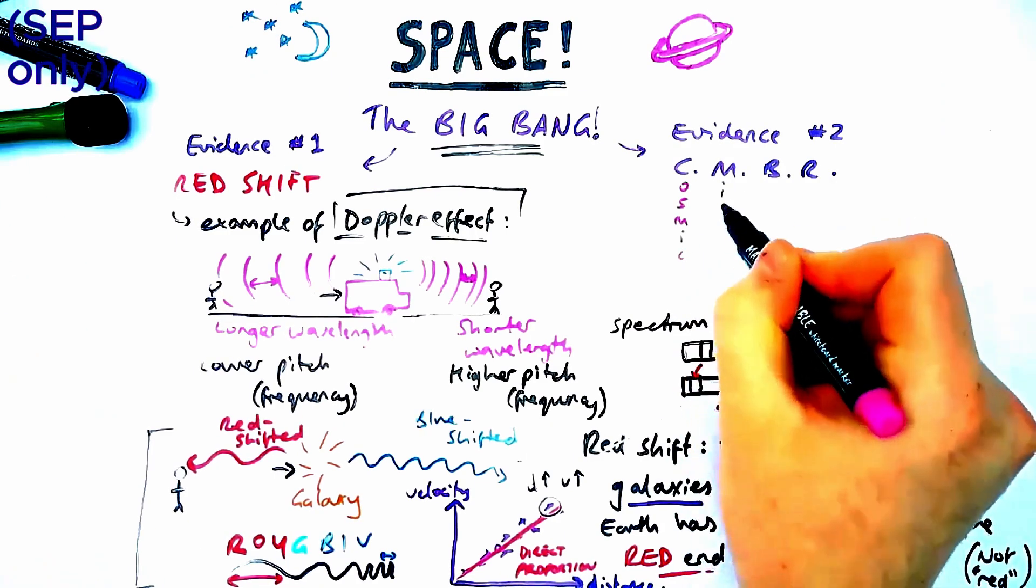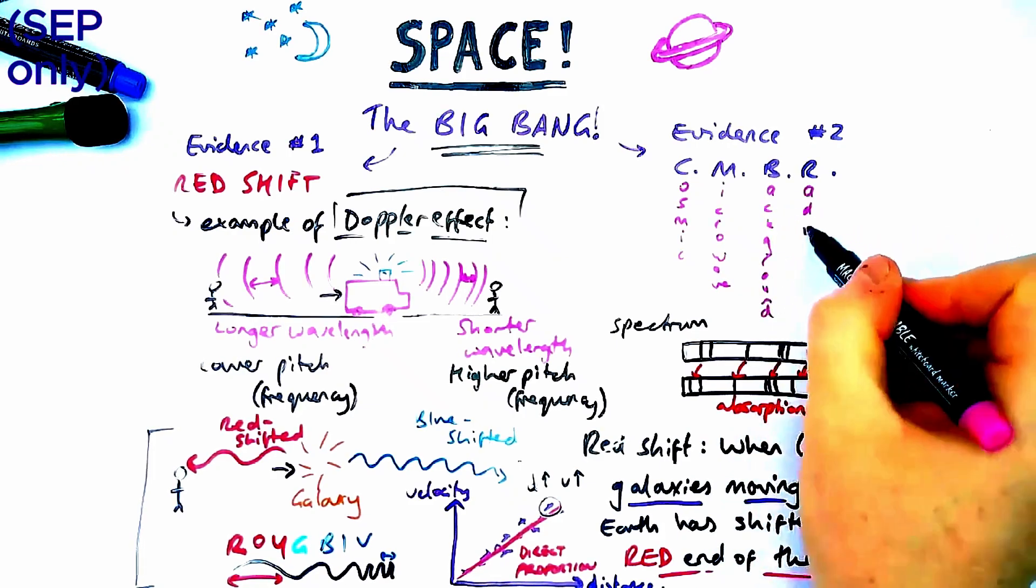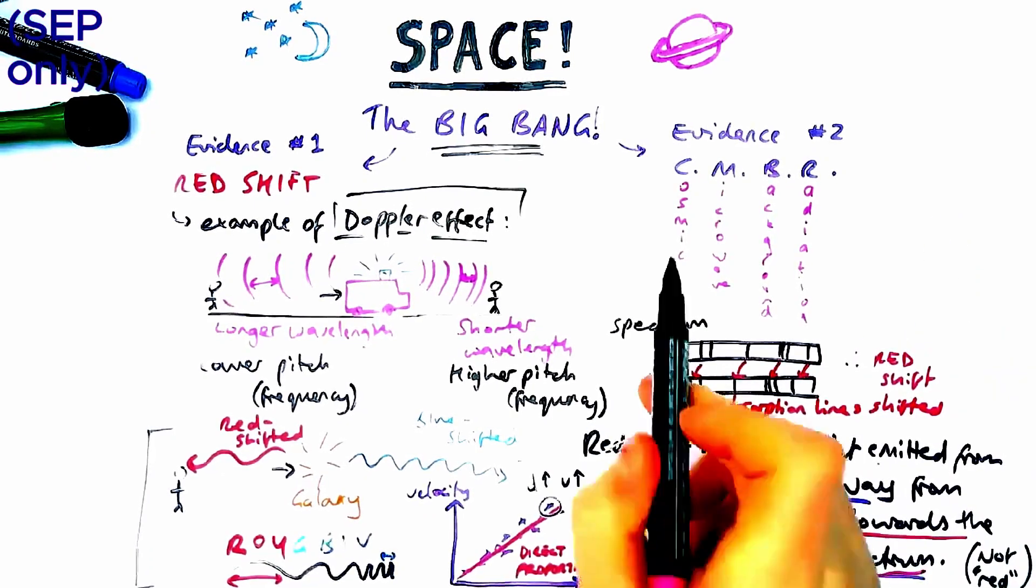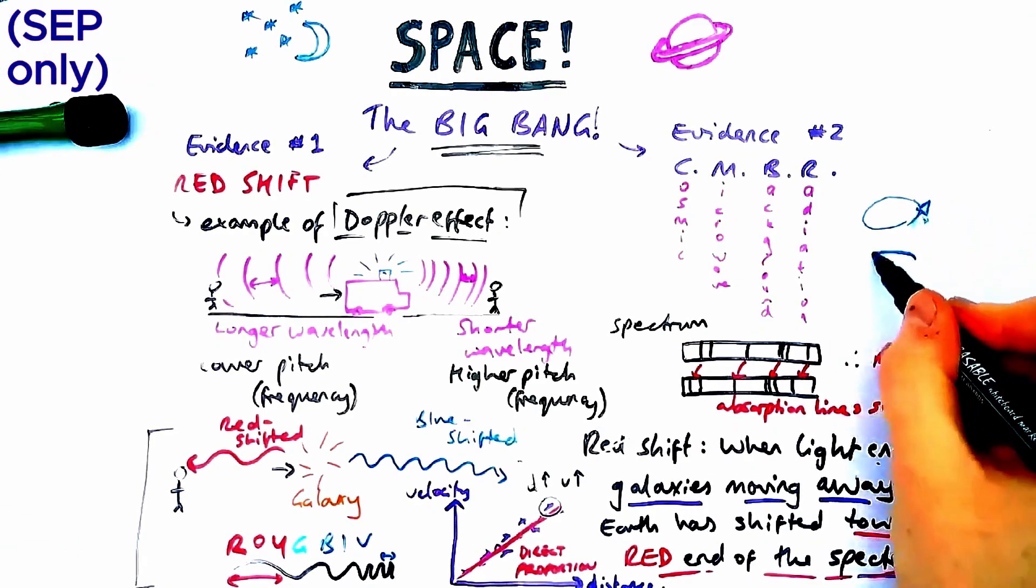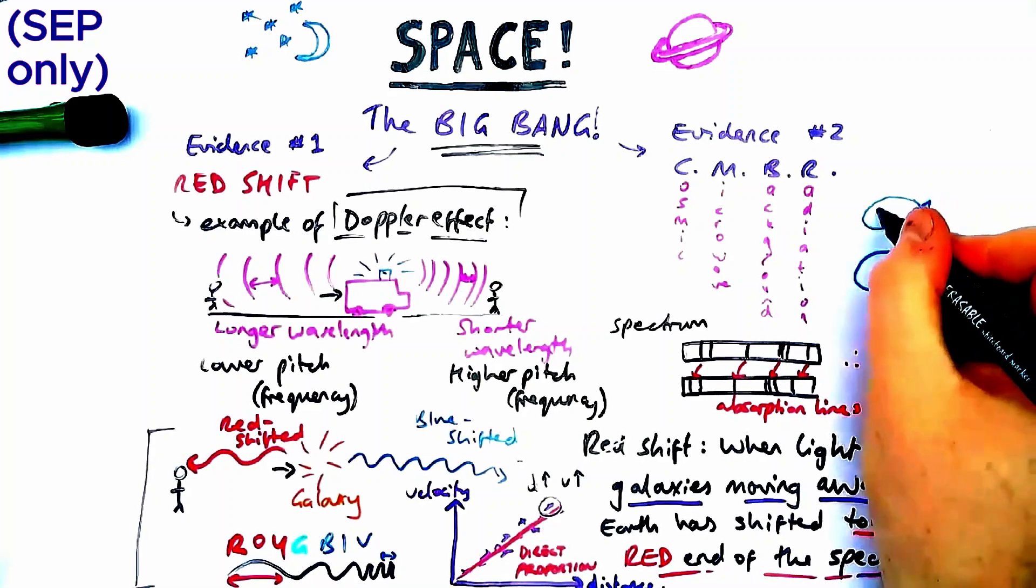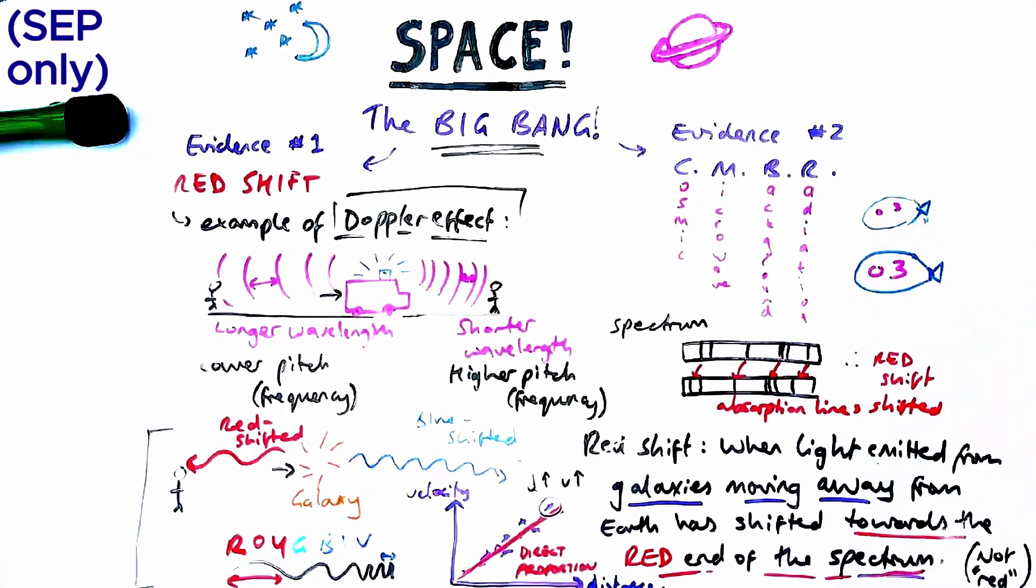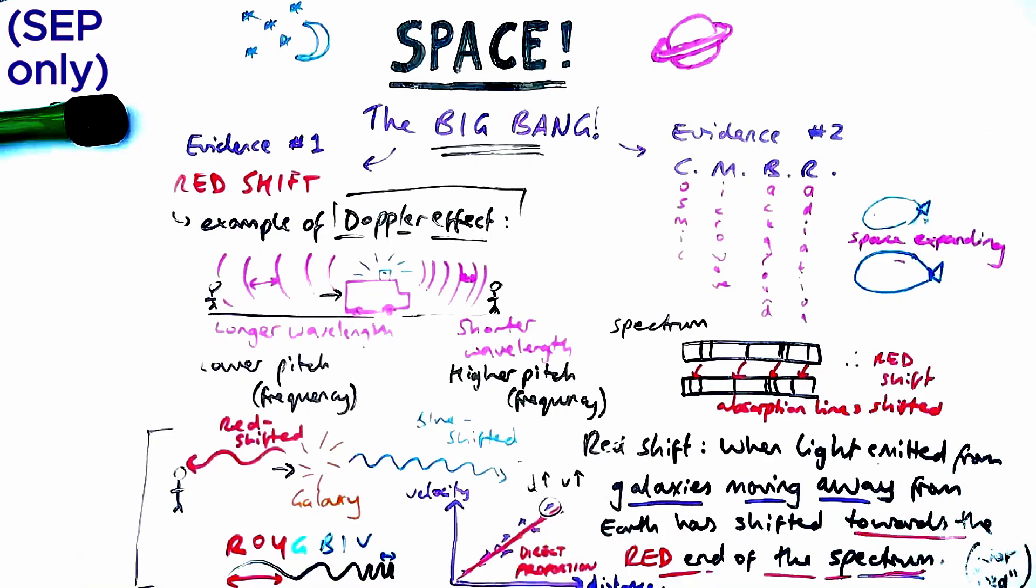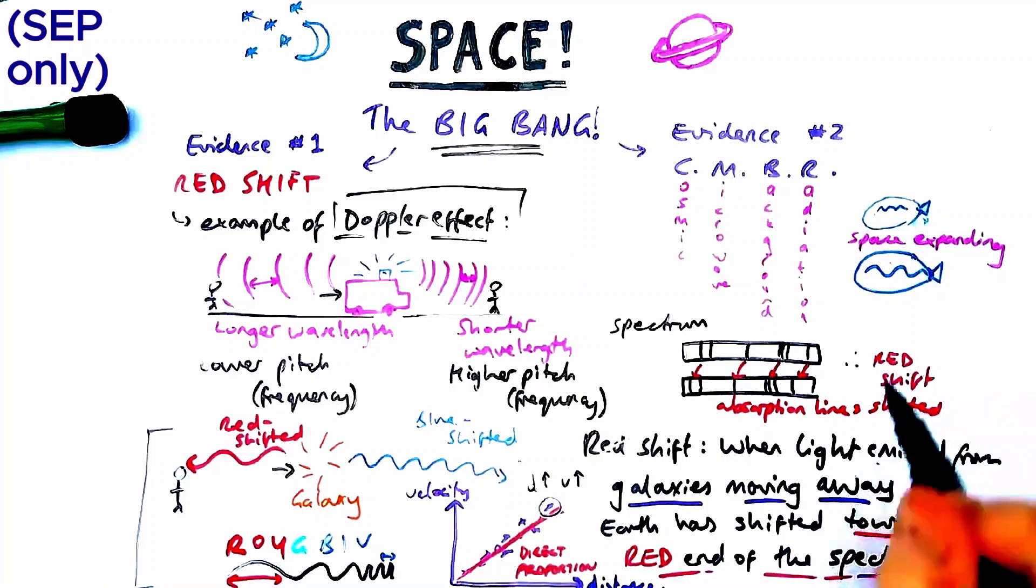Let's look at evidence two: CMBR, which stands for Cosmic Microwave Background Radiation. Cosmic means to do with space, background is just it's in the background, and radiation is a type of radiation. The analogy I'm going to use is that of a balloon. A balloon is like space - it's expanding. If I draw a little dot on the balloon, when I blow up the balloon, the dot stays the same but it expands. This is representing space expanding.